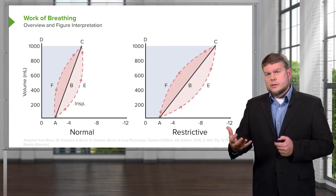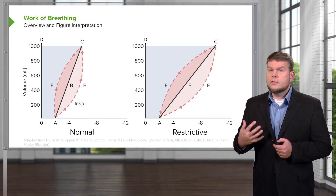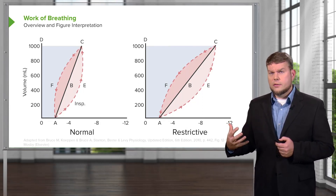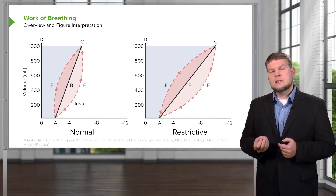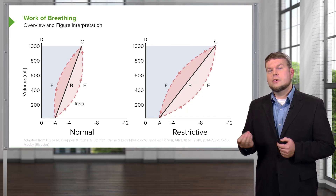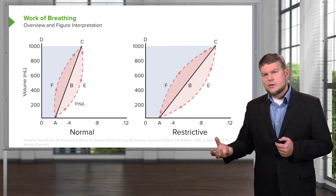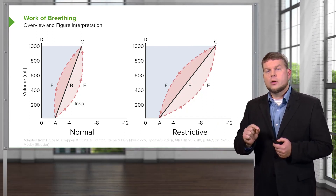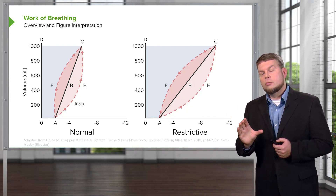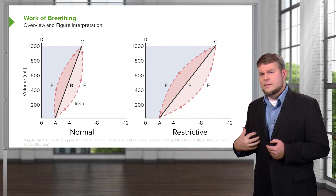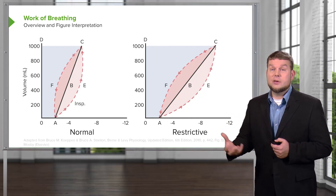Why this becomes important: if someone has a restrictive lung disorder, it's harder for them to fully inflate their lungs because of resistance in inflation. Therefore, that person is going to need to generate a greater negative pressure to fully fill the lungs, so they are going to take more energy to fill them. When they go from A, E, C, F, A, it requires a greater pressure change and they have to exert a lot more effort to get that air in.